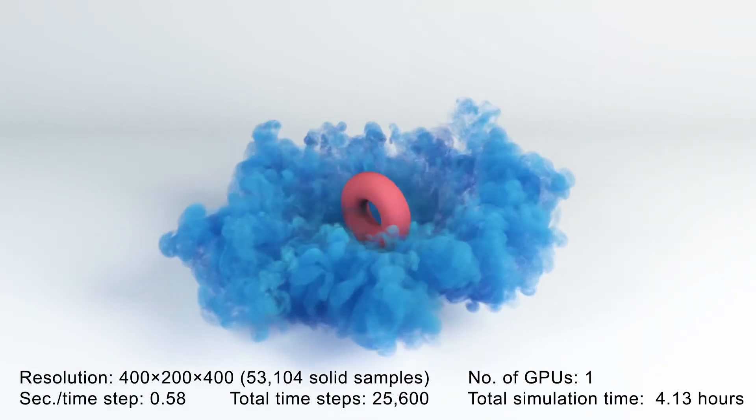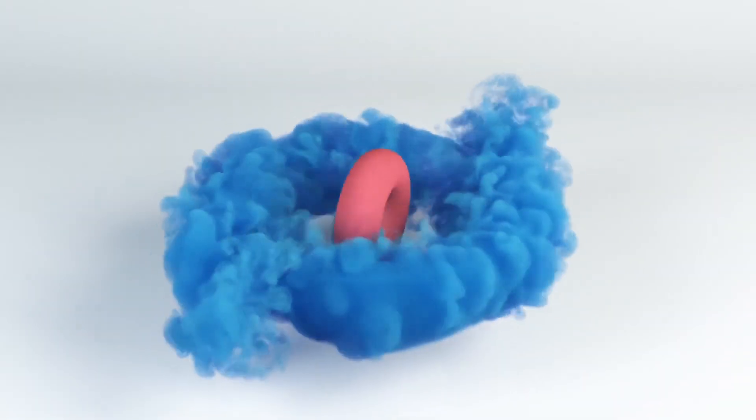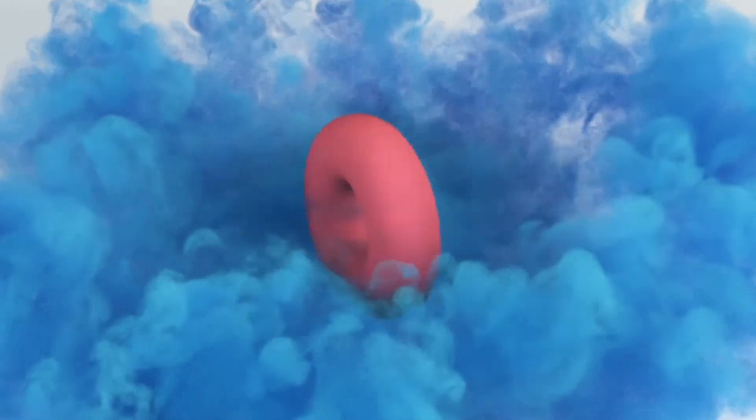We also simulate a one-way coupling of rotating torus where the surrounding smoke will be stirred to form complex turbulent patterns. Here is the zoom-in view of the turbulent smoke around the torus.